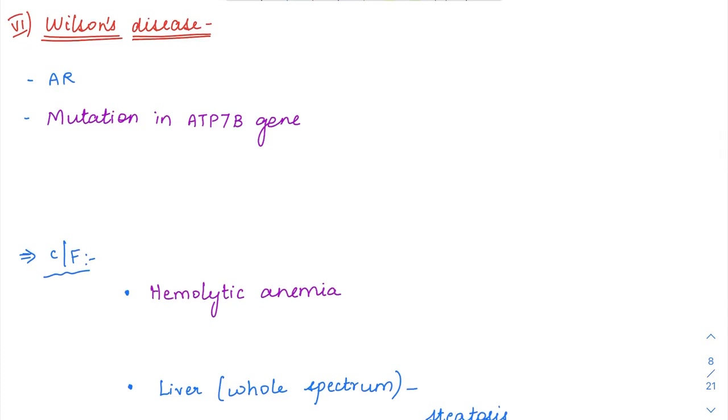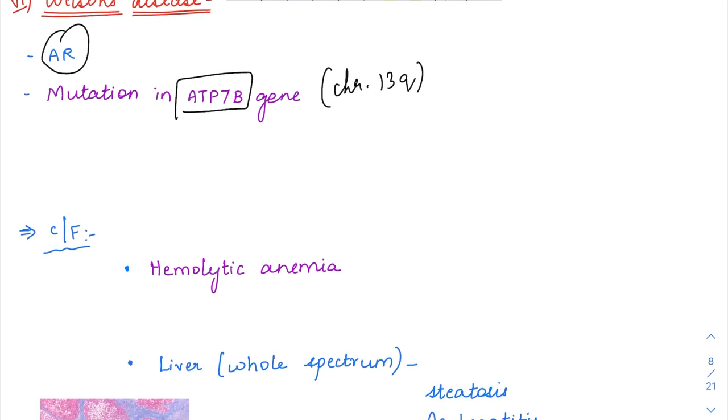Wilson's disease is an autosomal recessive condition caused by a mutation in the ATP7B gene. This ATP7B gene is present on chromosome 13q and is responsible for copper excretion in the liver.